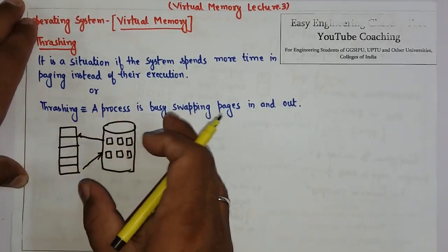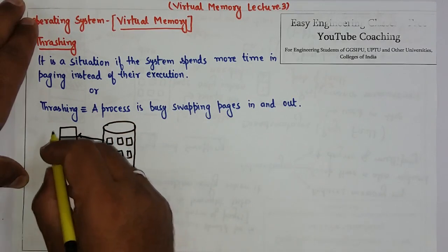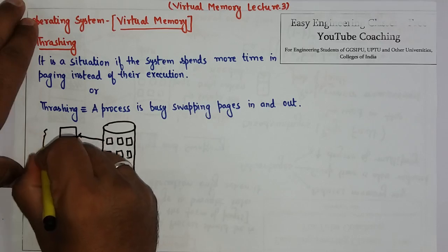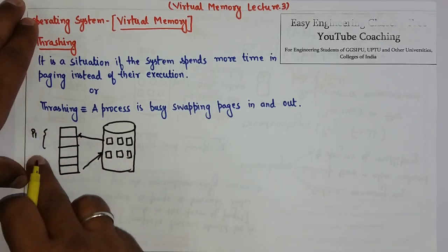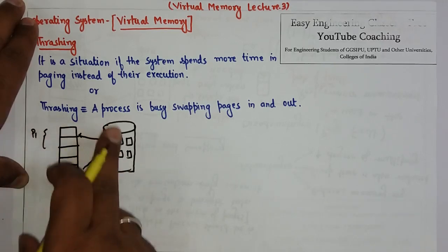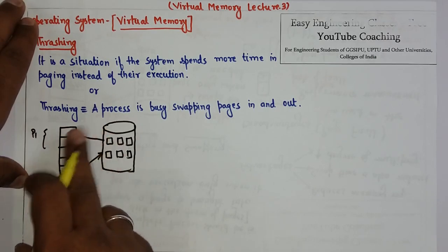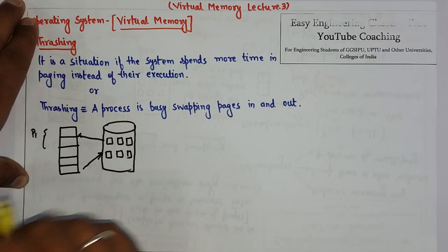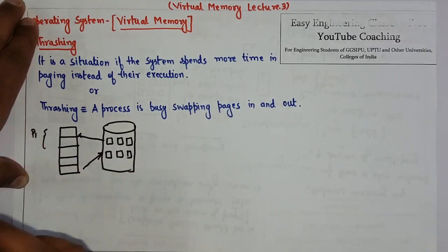Imagine if there is a process which is running, the process will not be executed. It will swap in and swap out. So this is a thrashing problem arise.